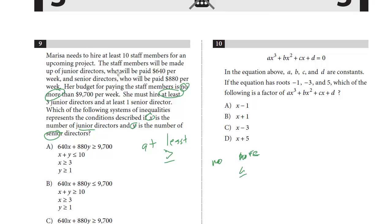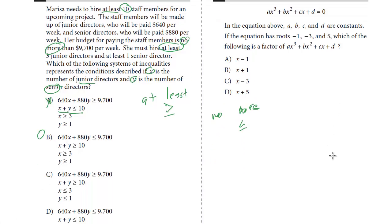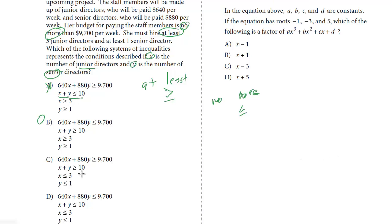The first inequality, she has to hire at least 10 staff members. So that's X plus Y and it's at least, so remember at least means greater than or equal to. So right away we know that it's got to be X plus Y is greater than or equal. So this is out because of this one, alright. This one is good, so we're still good for B. Let's take a look at C and D. C is good too because it's greater than or equal and D is out. So this is a way you can really kind of narrow it down. Now we're down to just two choices.